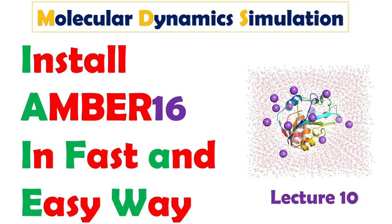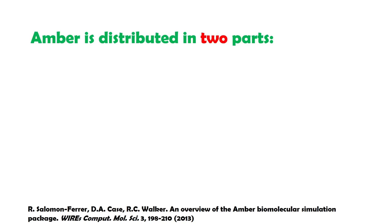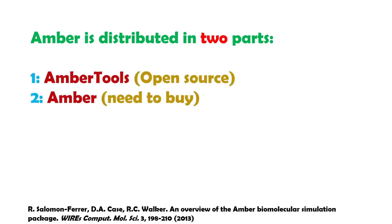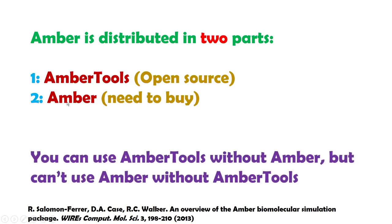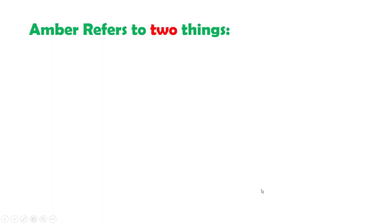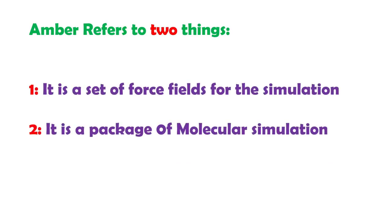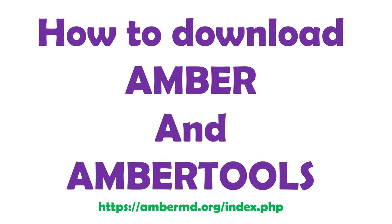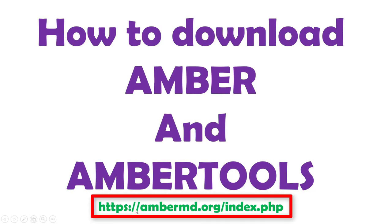AMBER is distributed into two parts: AMBER Tools and AMBER source code. AMBER Tools is open source, and you need to buy AMBER. You can use AMBER Tools without AMBER, but you can't use AMBER without AMBER Tools. AMBER refers to two things: first, it's a set of force fields for simulation, and second, it's a package of molecular simulation.